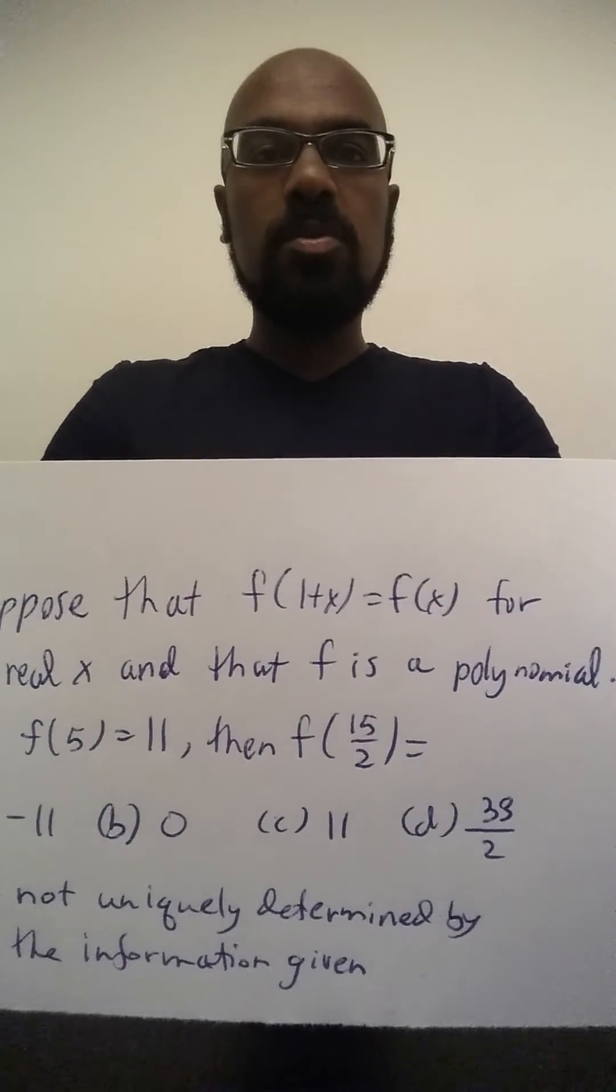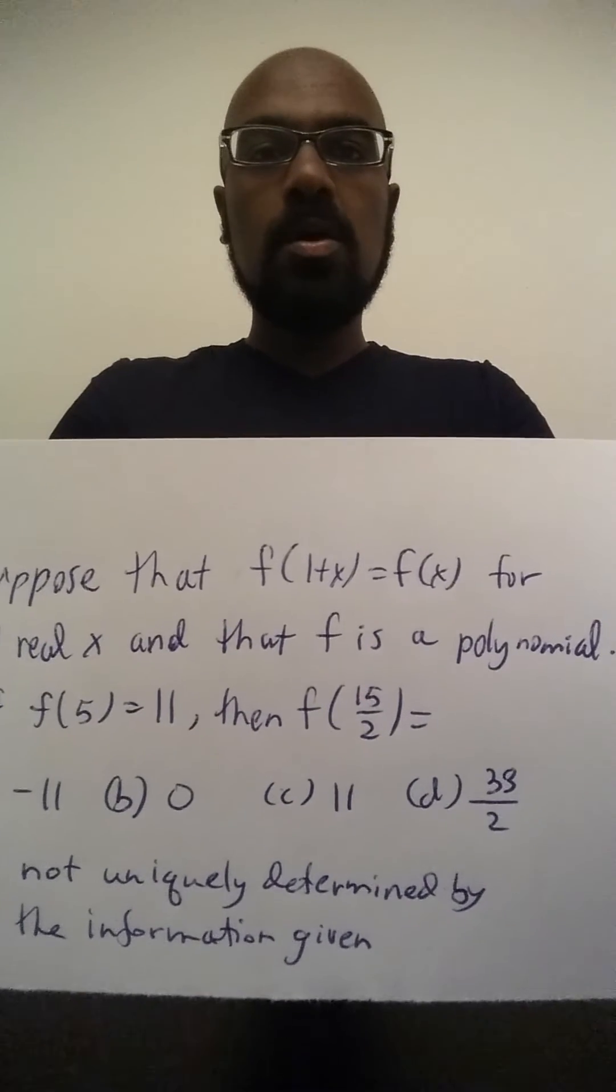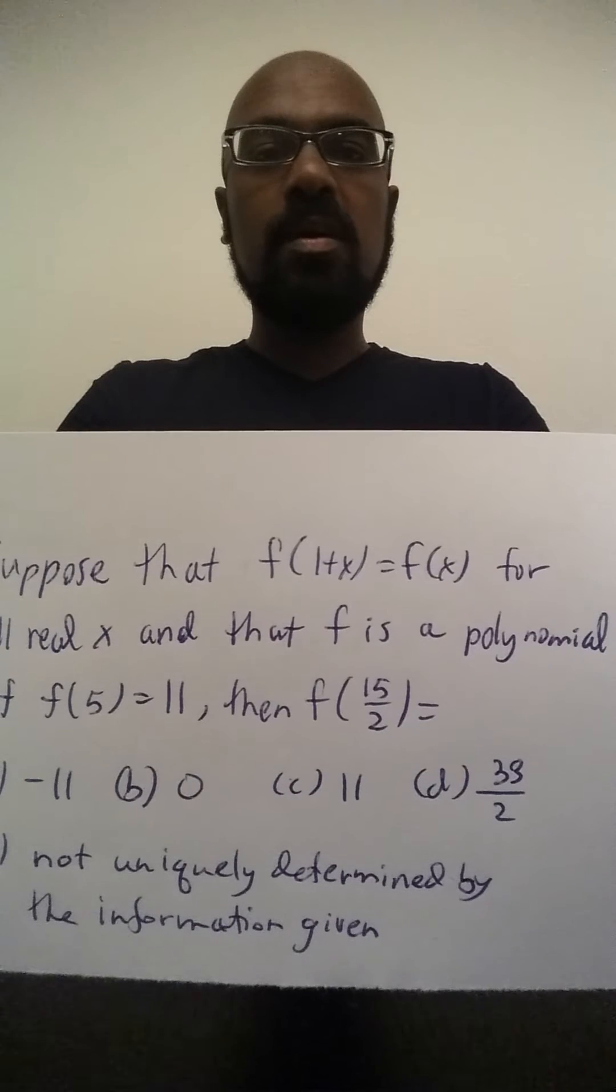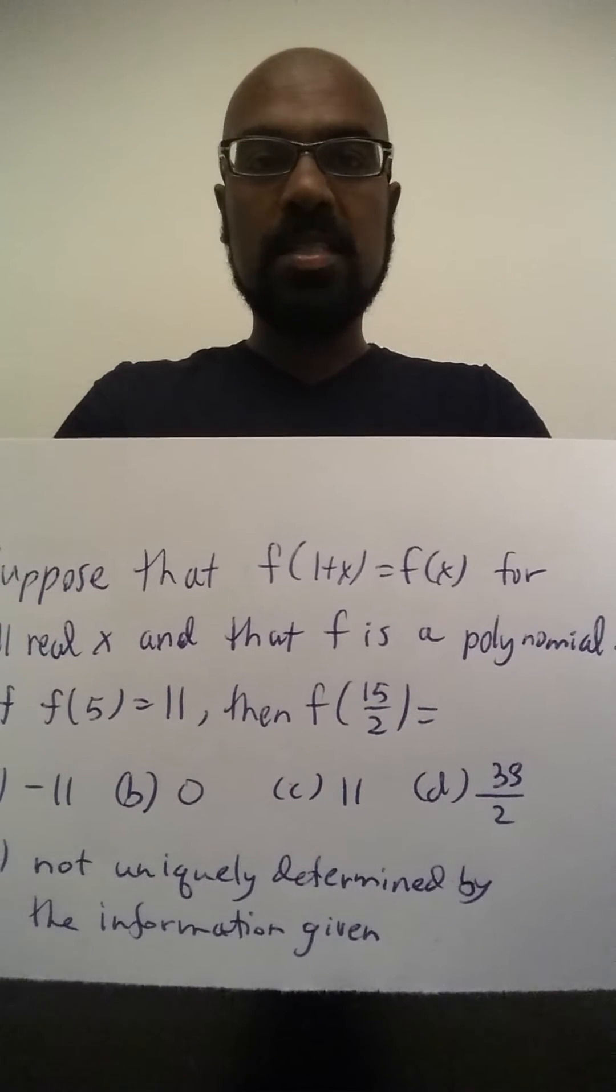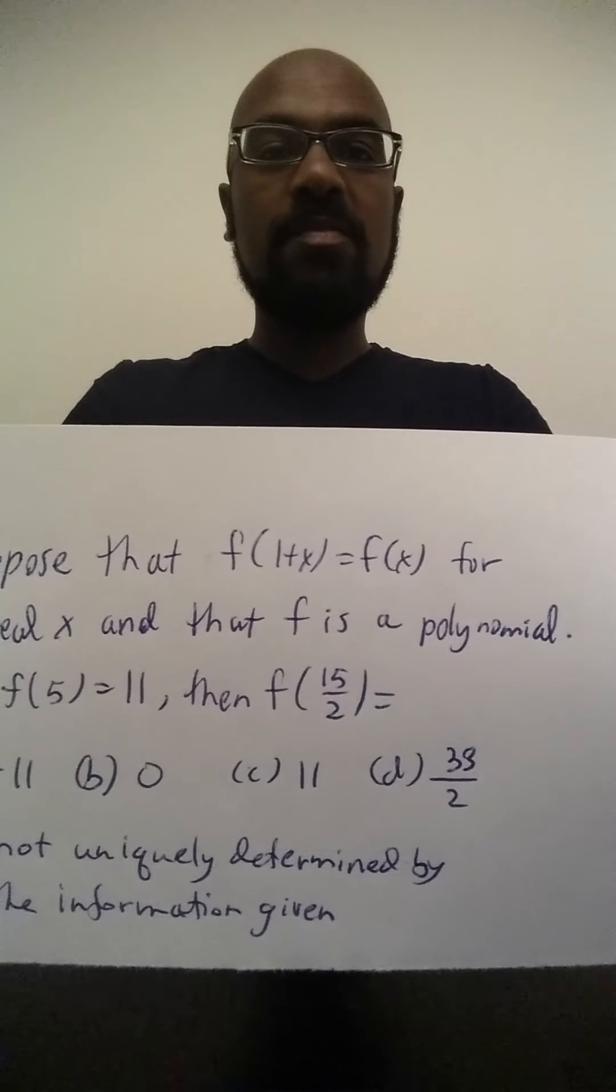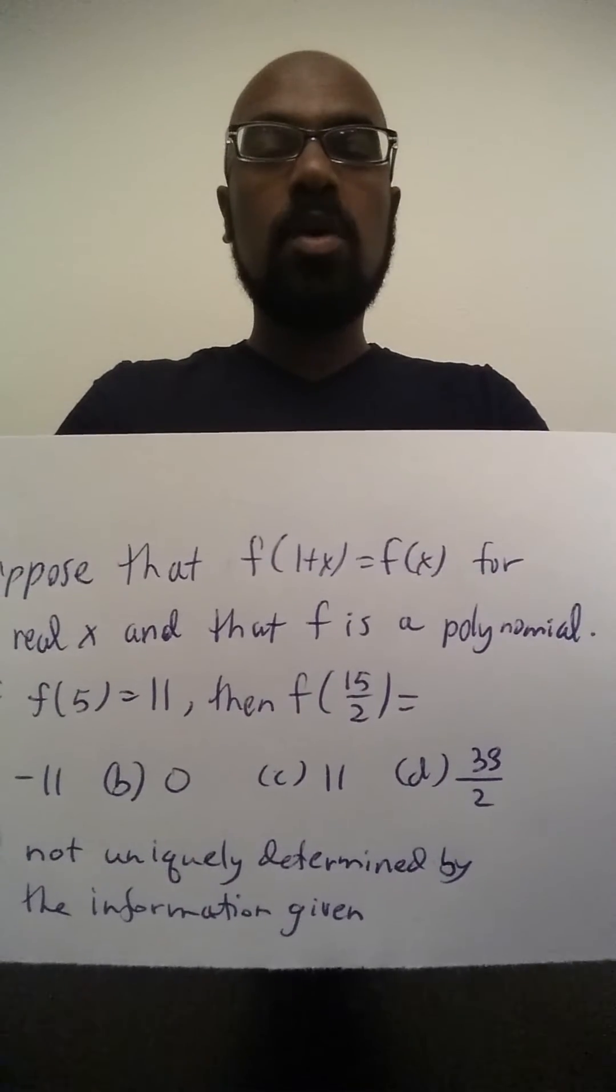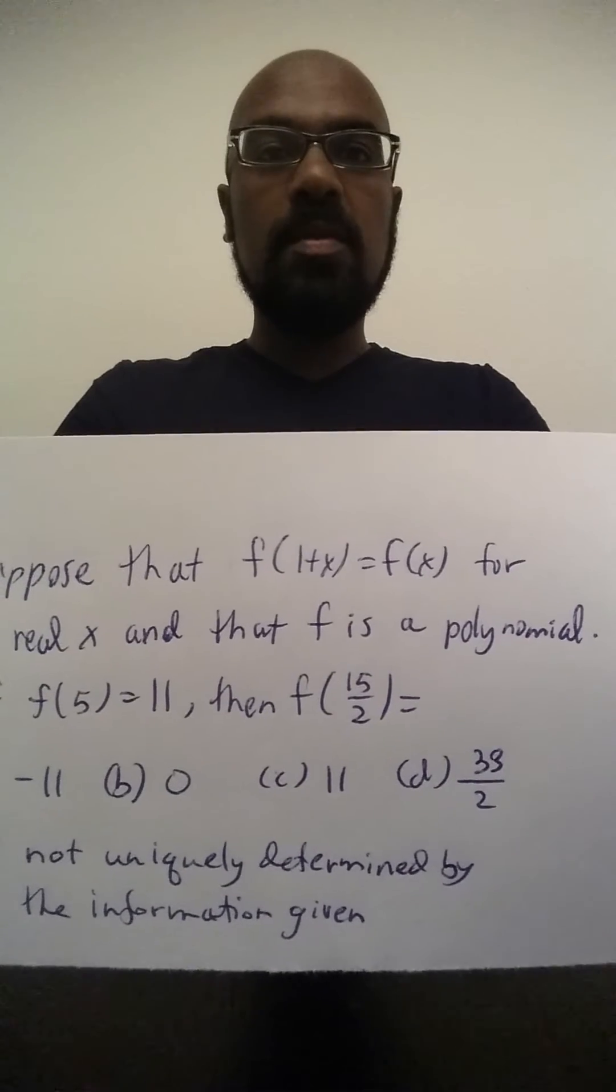If f of x is the polynomial given and we think of the graph of y equals f of x, the graph of y equals f of 1 plus x would be a shift of the graph of the polynomial y equals f of x by one unit in the negative direction.